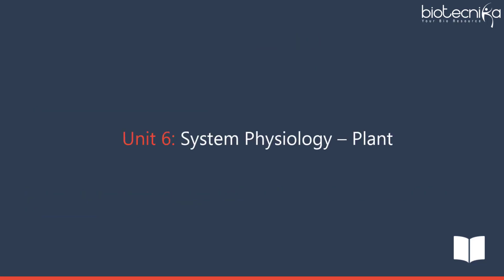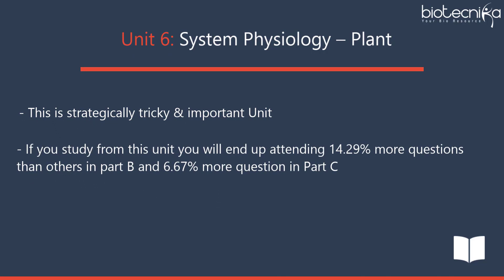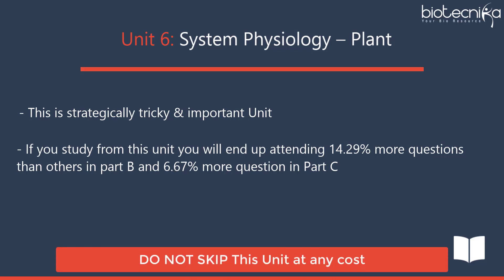Unit 6 – Plant and System Physiology is a strategically tricky and important unit. If you study from this unit, you will end up attending 14.29% more questions than others in Part B and 6.67% more questions in Part C. Do not skip this unit.